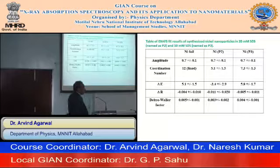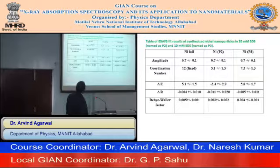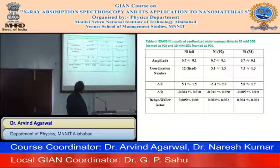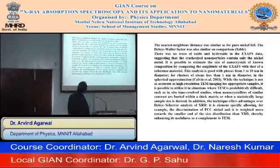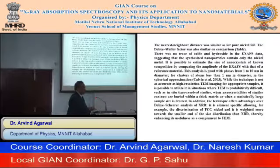For nickel foil (standard) and samples P2 and P3 — prepared with 10 mM and 20 mM SDS respectively — the coordination number is about 5 for P2 and about 7 for P3. The r value and the Debye-Waller factor were also measured, which gives information about the phase and position of nickel in the material. Following the method of Calvin et al. (2003), we attempted to calculate the particle size from EXAFS data, but the value obtained differed significantly from the particle size measured by XRD, TEM, or HRTEM.